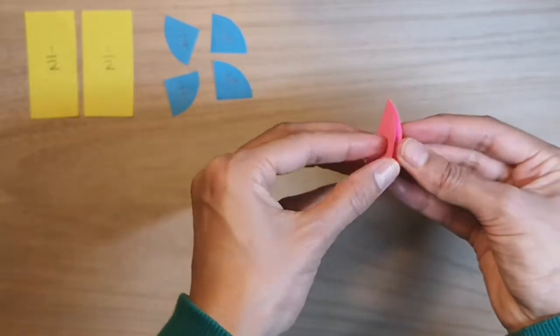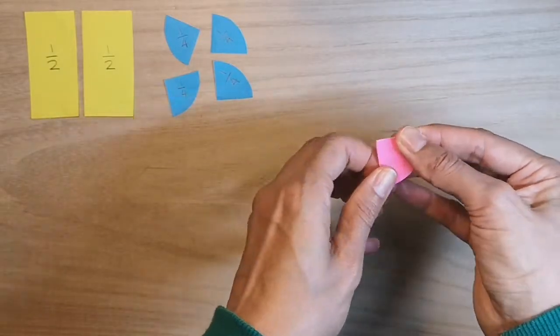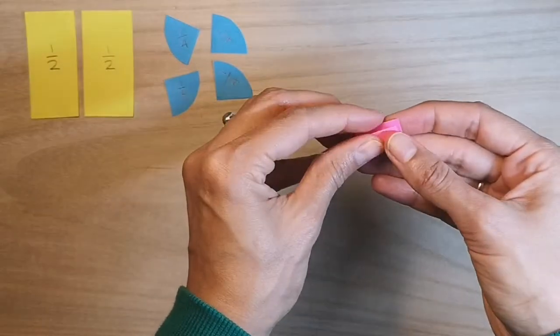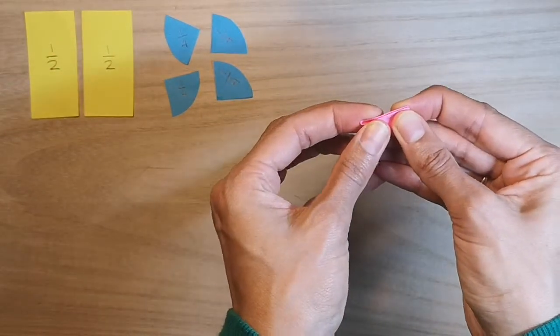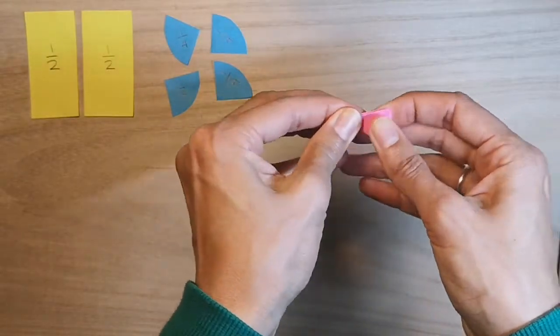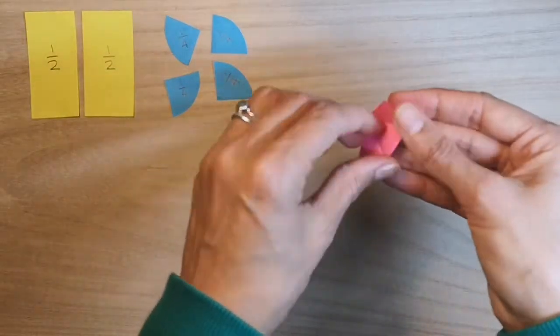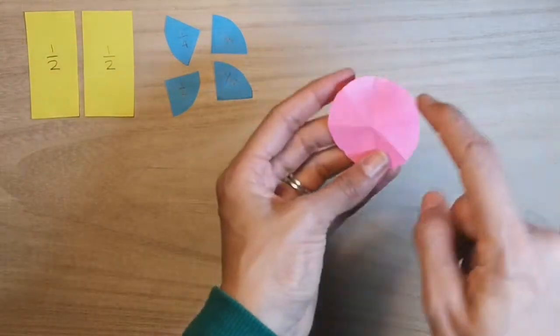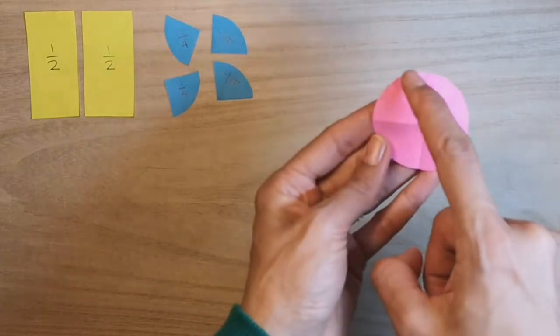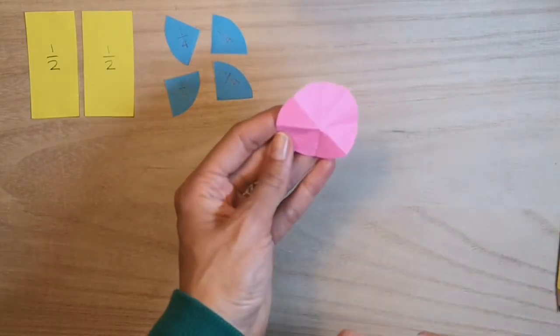Let's just check that, we open it up, yes, one, two, three, four quarters. I'm now going to fold this in half again. So I'm splitting one quarter into two. And now if I open it up, I've got one, two, three, four, five, six, seven, eight sections, which means I've split it into eighths.